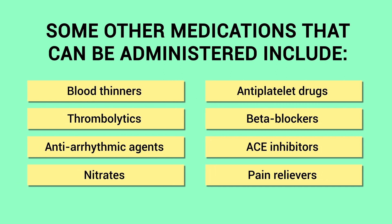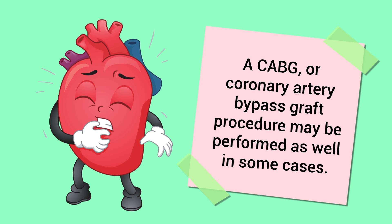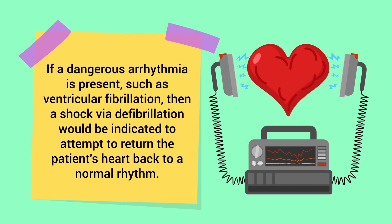Some other medications that can be administered include blood thinners, thrombolytics, antiarrhythmic agents, nitrates, antiplatelet drugs, beta blockers, ACE inhibitors, and pain relievers. An angioplasty procedure may be used to unblock the arteries, and a CABG procedure may be performed as well in some cases. If a dangerous arrhythmia is present, such as ventricular fibrillation, then a shock via defibrillation would be indicated to attempt to return the patient's heart back to a normal rhythm.